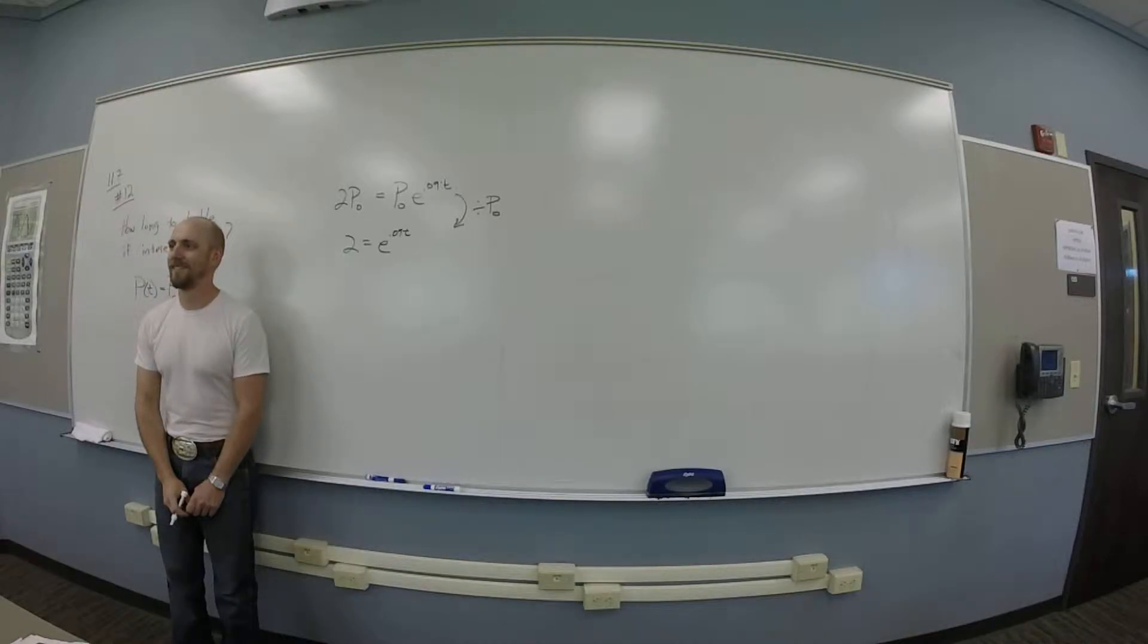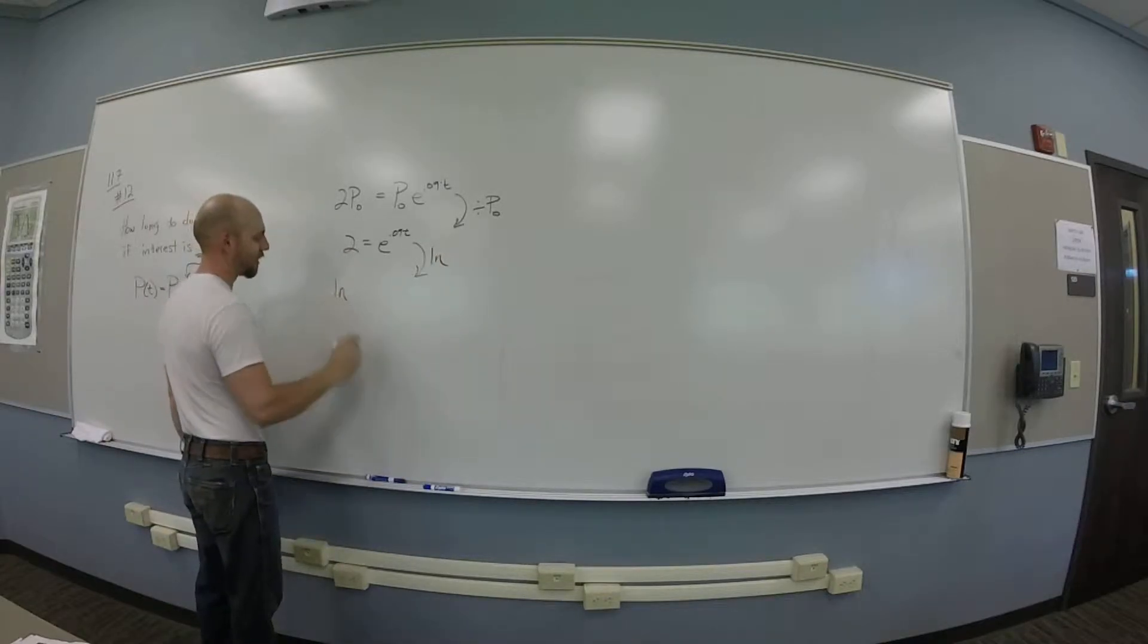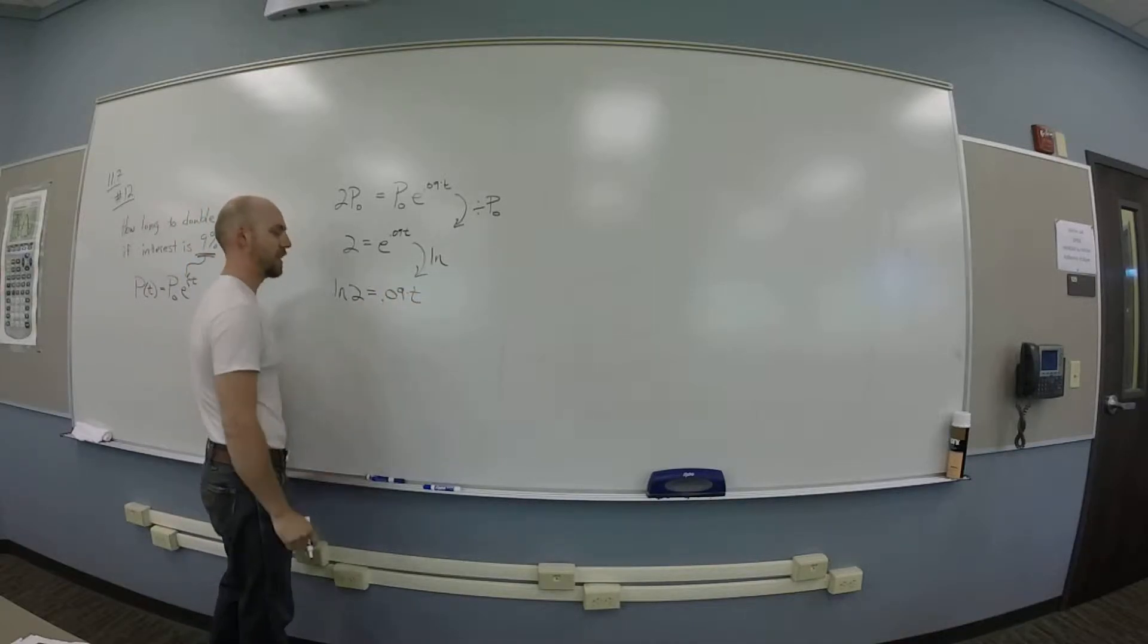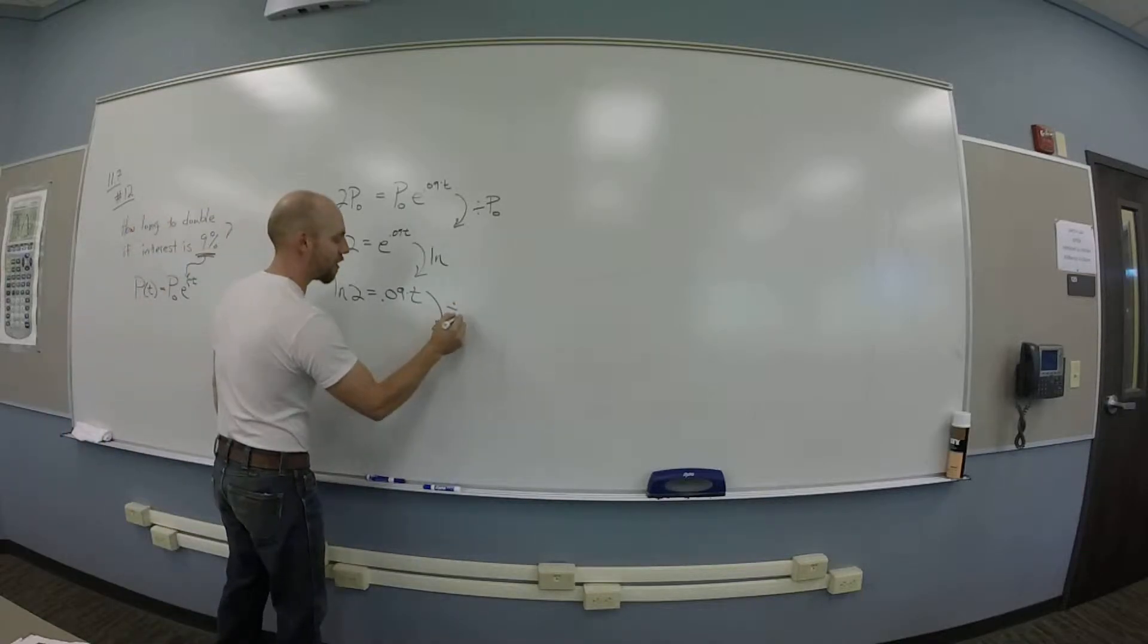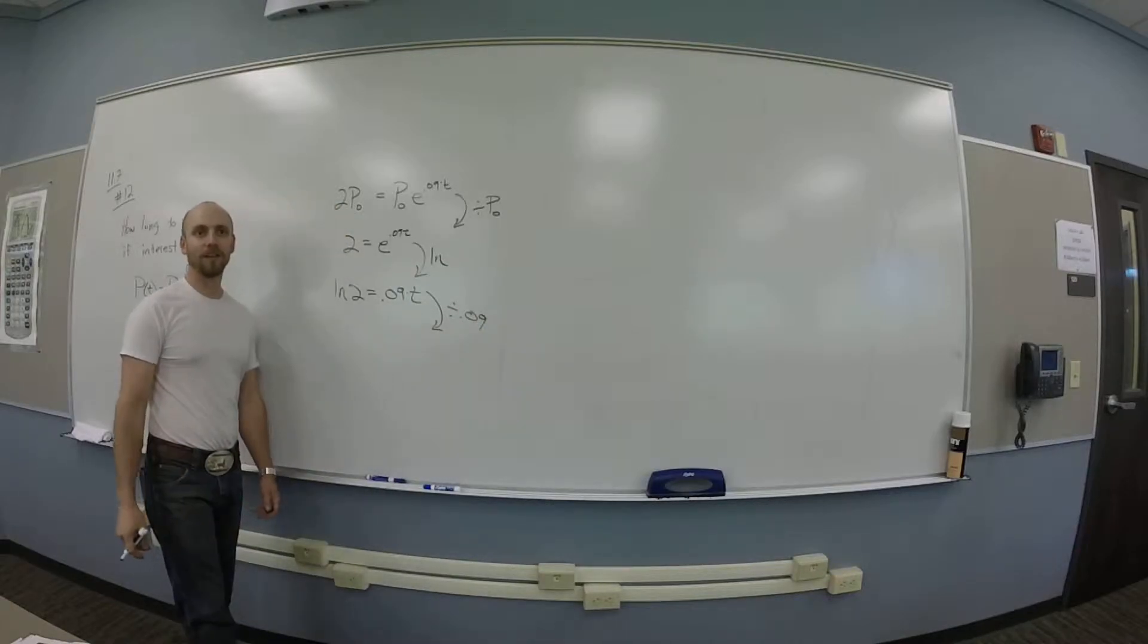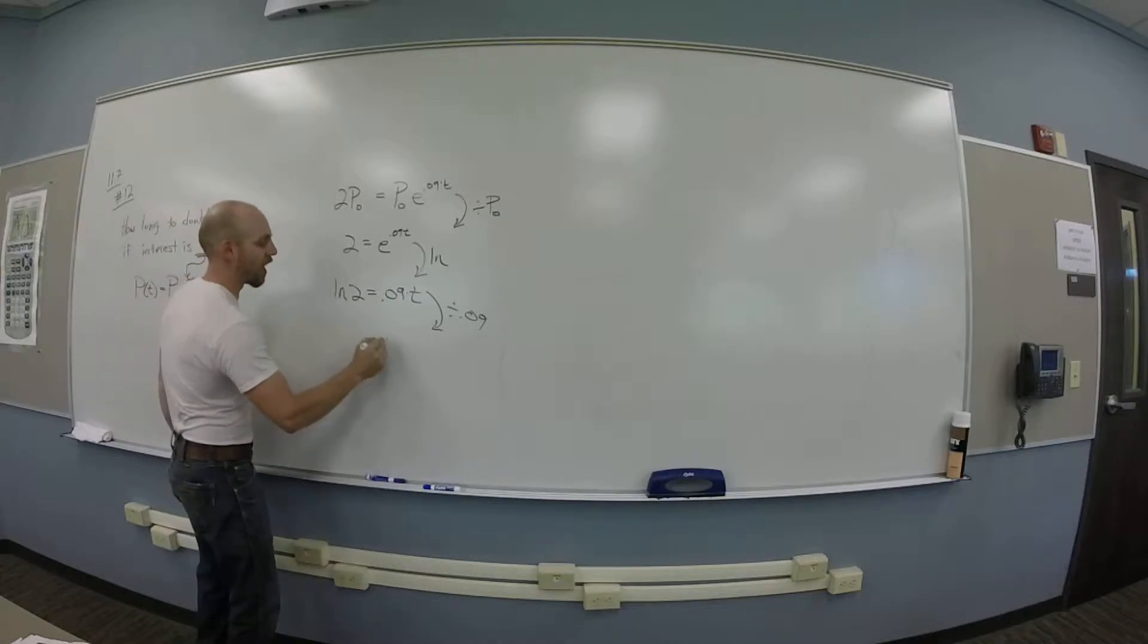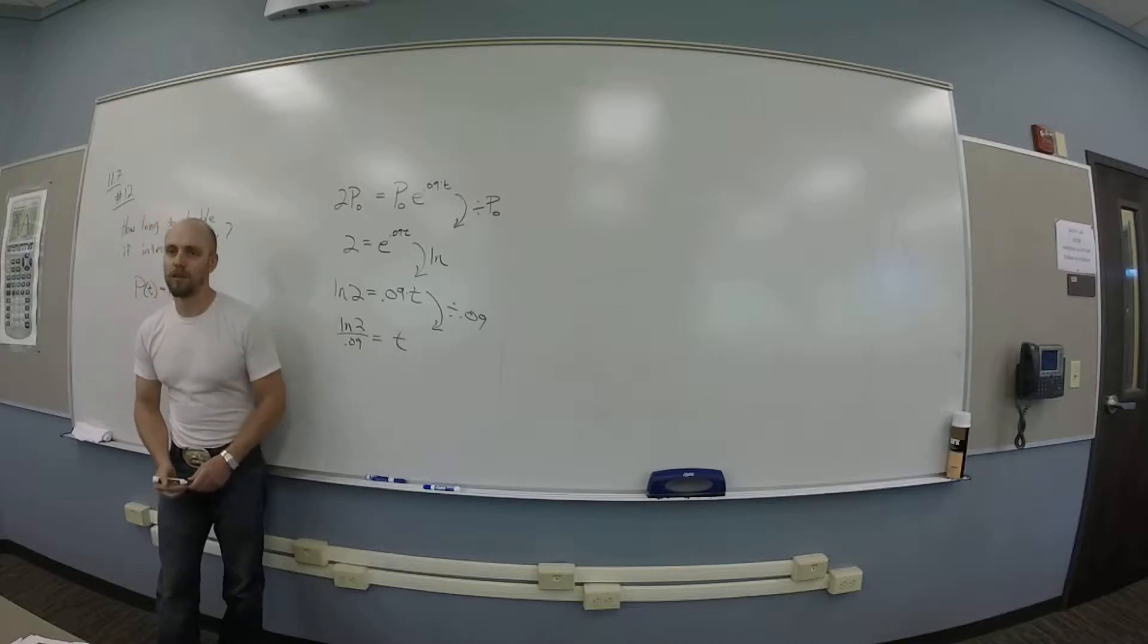So I've got two is e to the .09T. Then what? Natural log. Yeah, natural log this stuff. So if you log this stuff, you'll have natural log of two is .09 times T. And then what? Divide by .09. You guys might notice these are always going to be exactly the same steps, right? Yes. You're going to divide through by the P naughts, you're going to log both sides, and then you're going to divide by either R or T. So I've got T is log of two over .09. This stuff's familiar.